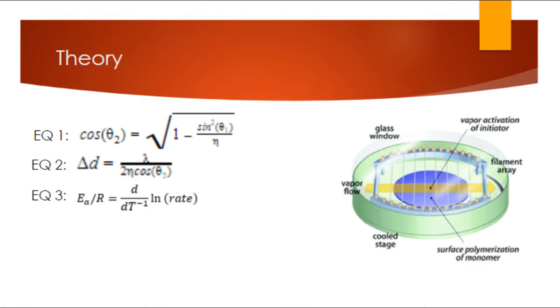Finally, equation 3 shows the relationship between deposition rate and the activation energy of the polymerization reaction. For our independent variable, we altered the ratio of the two reactant flow rates. The ratios tested were 1 to 2, 1 to 1, and 2 to 1 of the monomer flow rate to initiator flow rate.